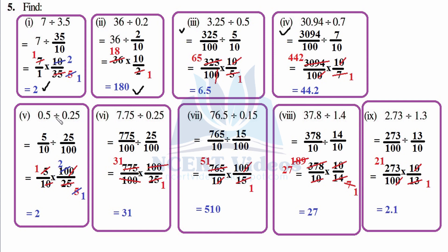For 5 over 10 divided by 25 over 100: multiplication, flipping gives 100 over 25, then cancel. 1×5 is 5, 5×5 is 25. For 775 over 100 divided by 25 over 100: division to multiplication, then 100 over 25 flipped — 100 and 100 cancel, and 25×1 is 25, then 25×3 is 75. So the whole number.